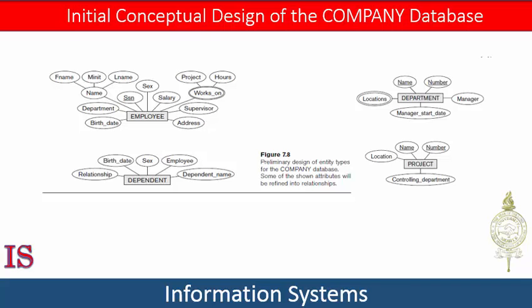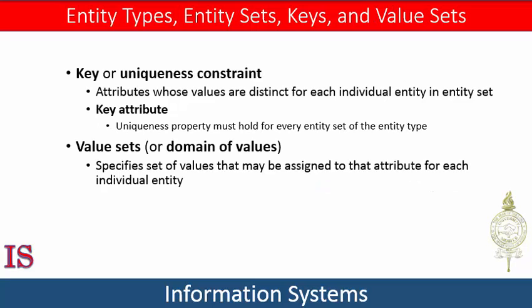The collection of entities of a particular entity type is grouped into an entity set, also called the extension of the entity type. An important constraint on the entities of an entity type is the key or uniqueness constraint on the attributes. An entity usually has one or more attribute values that are distinct for each individual entity in the entity set. Such an attribute is called a key attribute, and its values can be used to identify each entity uniquely.